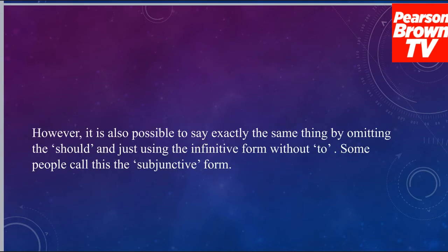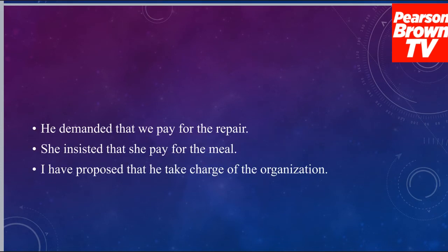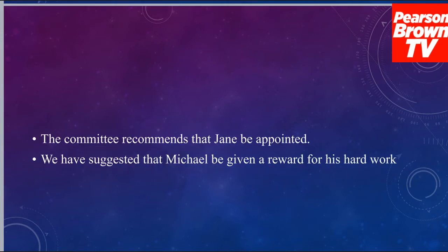However, it's also possible to say exactly the same thing by omitting the 'should' and just using the infinitive form without 'to'. This is what's called a subjunctive. Let's see those same examples using a subjunctive: He demanded that we pay for the repair. She insisted that she pay for the meal. I have proposed that he takes charge of the organisation. The committee recommends that Jane be appointed. We have suggested that Michael be given a reward for his hard work. They mean exactly the same thing with 'should' or with the subjunctive — it's your choice.